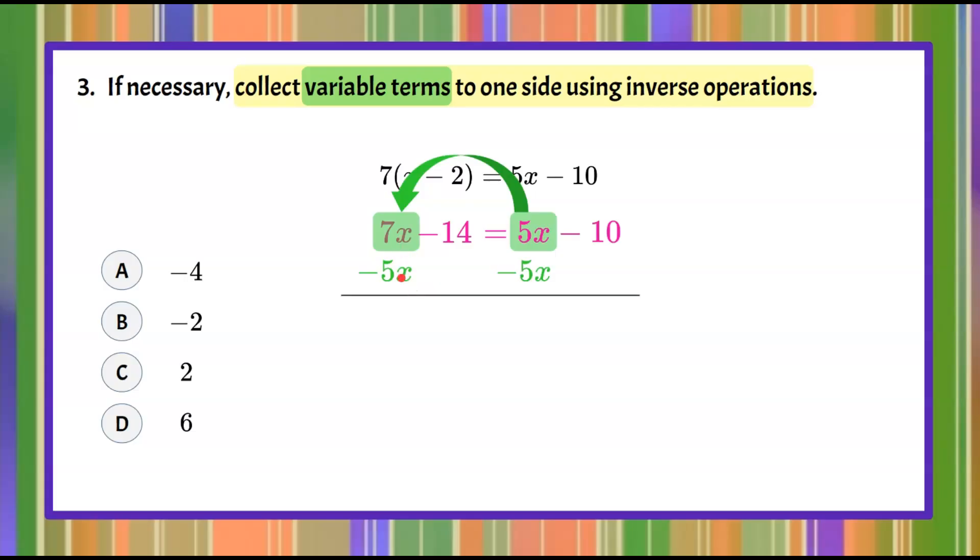So 7x subtract 5x is 2x. Bring down our negative 14 constant and that is going to equal. 5x and negative 5x are a zero pair leaving me just negative 10 on the right. So we're done step three.